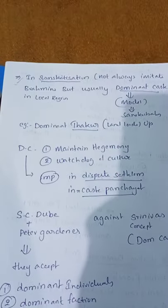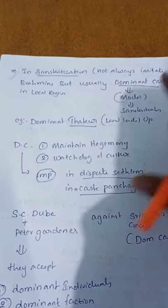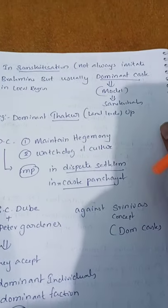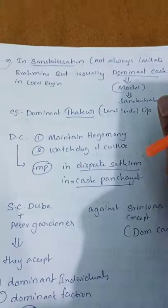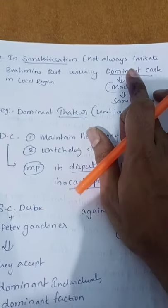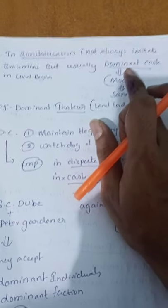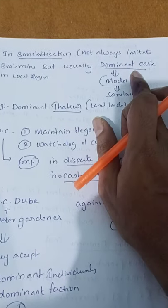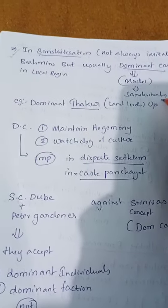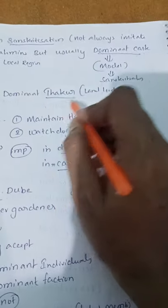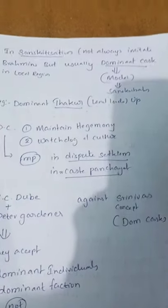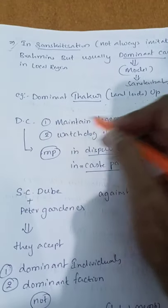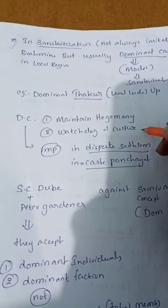We know the concept of Sanskritization, where lower castes imitate the cultural traditions of higher castes. However, this is not always restricted to Brahmins — in some regions, dominant castes also serve as a model for Sanskritization. An example is the dominant Thakur landlord caste in Uttar Pradesh.